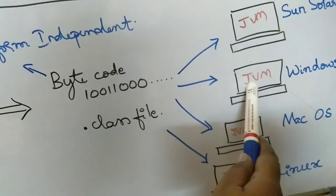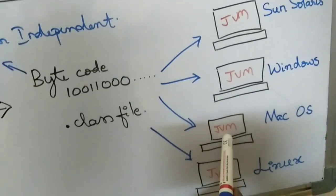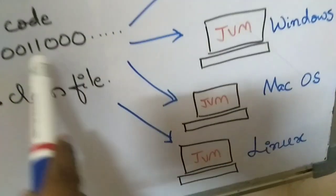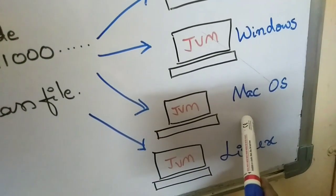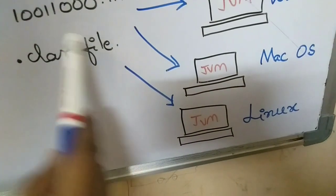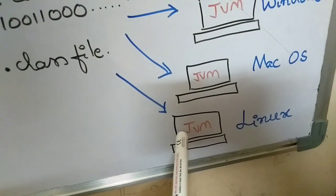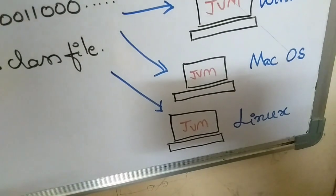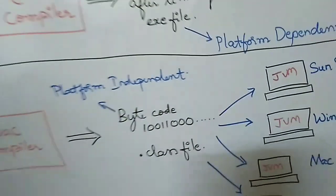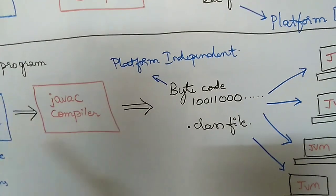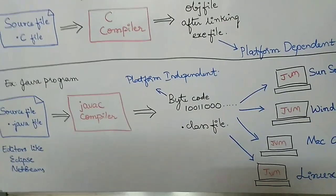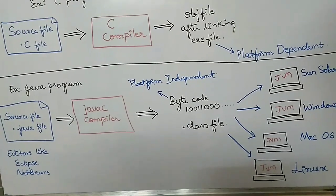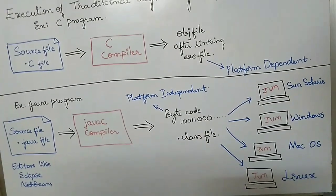You need to have the JVM specific to Windows installed on Windows. If you want the bytecode to execute on Mac OS, you need the JVM specific to Mac OS. If you want to execute it on Linux, you need the JVM specific to Linux. Because of the bytecode, you can execute the Java program on various operating systems — this is called platform independent. Hope this video is helpful to you. Stay home, stay safe, happy learning!